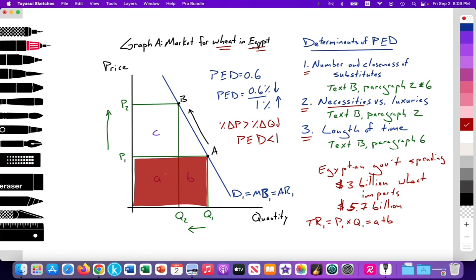Because spending equals revenue. The Egyptian government's spending is equal to the revenue earned by the firms and nations that are exporting that wheat. So $3 billion worth of revenue due to the government spending of Egypt, P1 times Q1. Then we notice that as price rises from P1 to P2, total revenue increases. So here we can highlight that total revenue 2 is equal to P2 times Q2, which is equal to areas C plus A. And that could have a value that's equal to, according to the article for the Egyptian government, $5.7 billion worth of wheat imports versus total revenue 1, which is equal to about $3 billion worth of wheat imports.